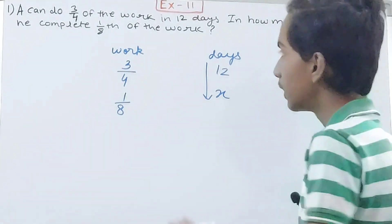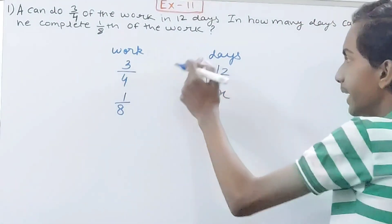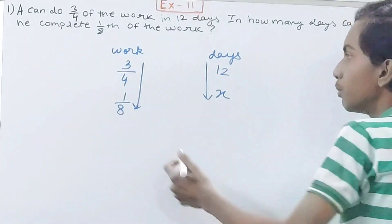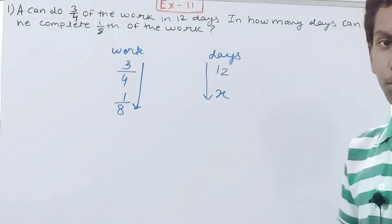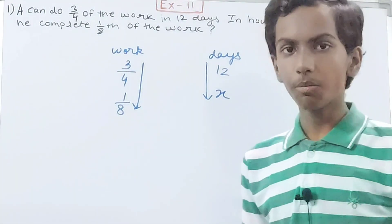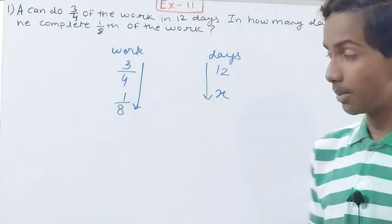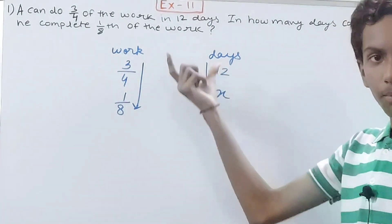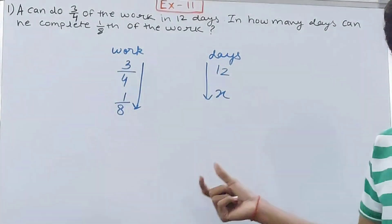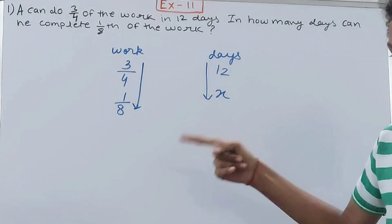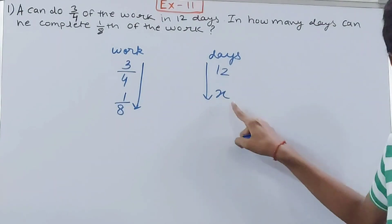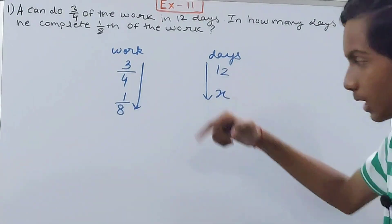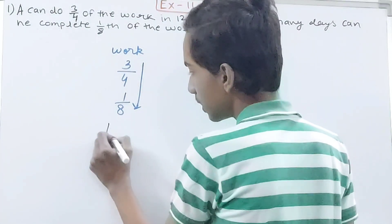Why arrows? Because this is a question of direct variation. Work and days vary directly — more work means more days required, when the number of men is the same. Since it's direct variation, the arrows face the same direction, towards x.